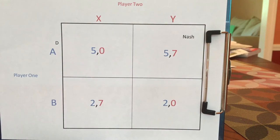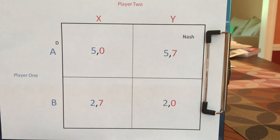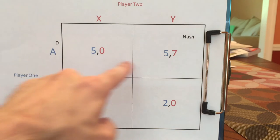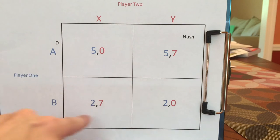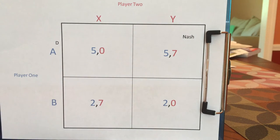In this game, A is a dominant strategy because A gives player one five no matter what. B gives lower than five. But player two doesn't have a dominant strategy.